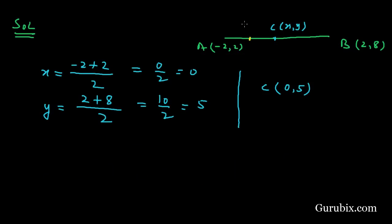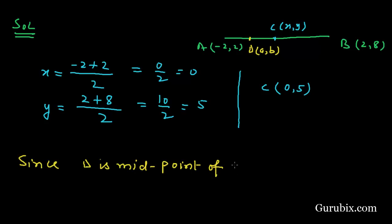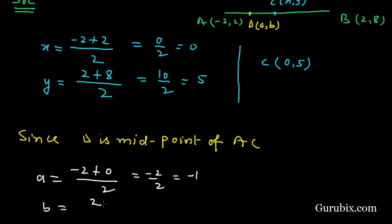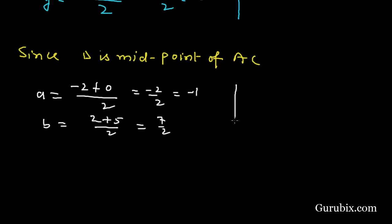Suppose D has coordinates (a, b) and is the midpoint of AC. Since D is the midpoint of AC, a = (x1 + x2) / 2 = (-2 + 0) / 2 = -2 / 2 = -1. And b = (y1 + y2) / 2 = (2 + 5) / 2 = 7 / 2. Therefore, the coordinates of point D are (-1, 7/2).